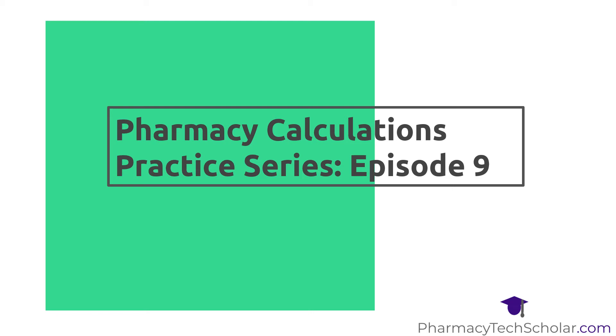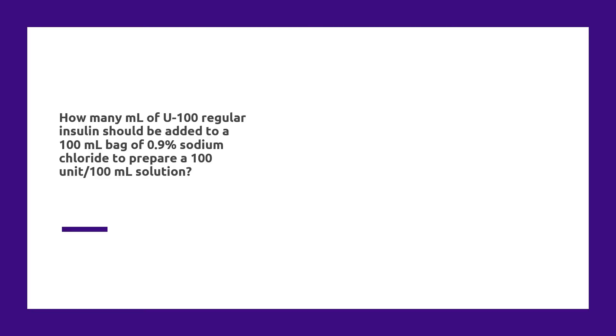Hello there and welcome to our ninth episode in our pharmacy calculations practice series. Today's question reads: How many milliliters of U-100 regular insulin should be added to a 100 milliliter bag of 0.9% sodium chloride to prepare a 100 unit per 100 milliliter solution?